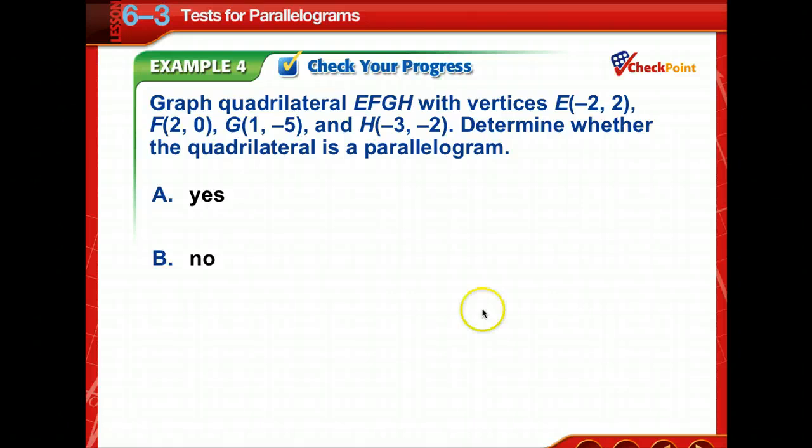Time for you to check your progress. Determine whether this quadrilateral is a parallelogram. Remember what you need to do. First, sketch your points, plot all these on a coordinate plane, and then see which two sides you need to find out are parallel to each other. And then determine the slope of those two lines.